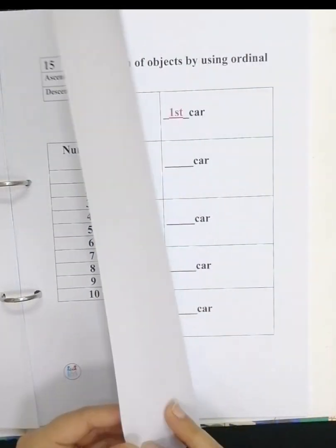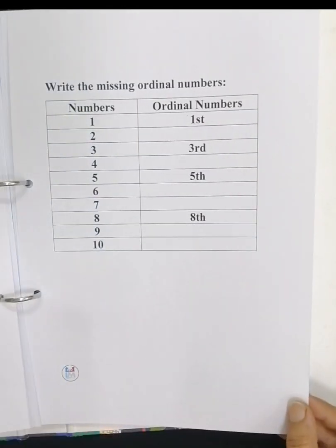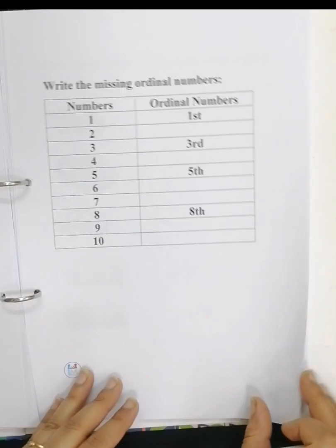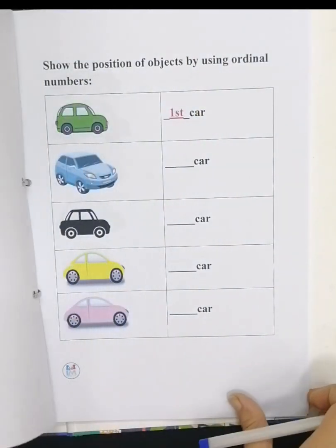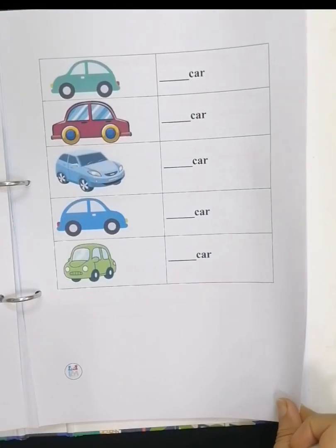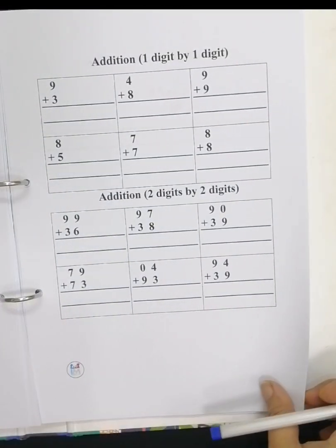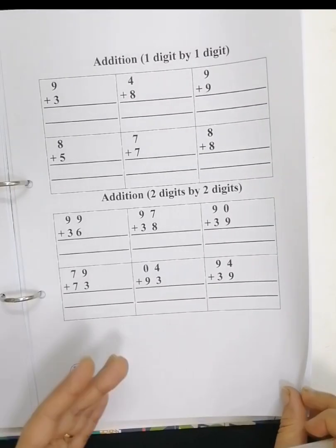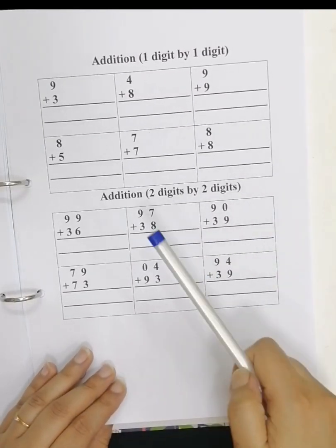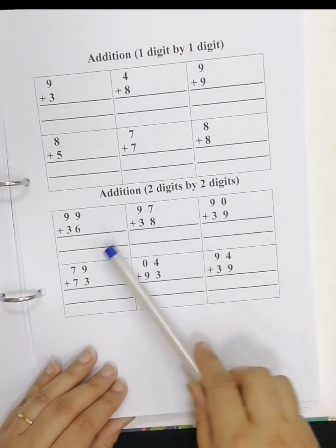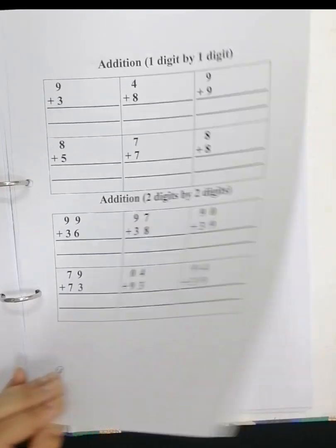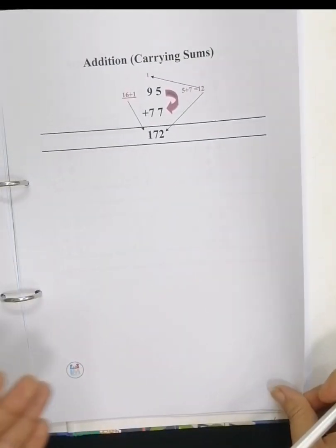Ordinal numbers. And addition, now in different four ways. The first one is one digit by one digit, and here two digit by two digits, and addition carrying sum.